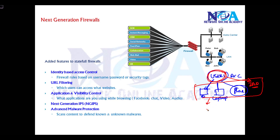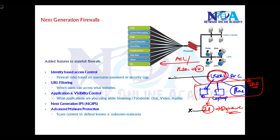If we write rules based on specific IPs, we'd need four separate rules for the same user. Instead, we can write rules based on the user identity, so regardless of which device or IP address is used, the same specific rules apply. This is called identity-based access control, where rules are defined based on username, passwords, or security tags at Layer 2.